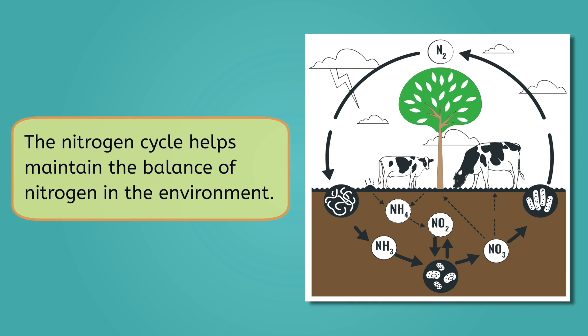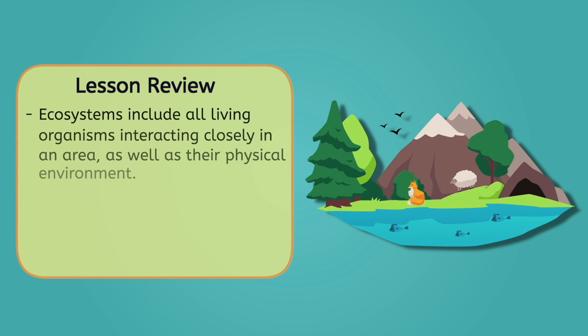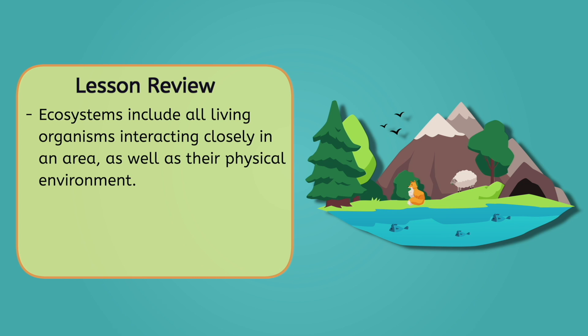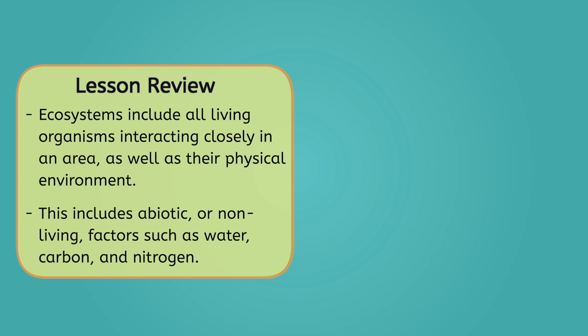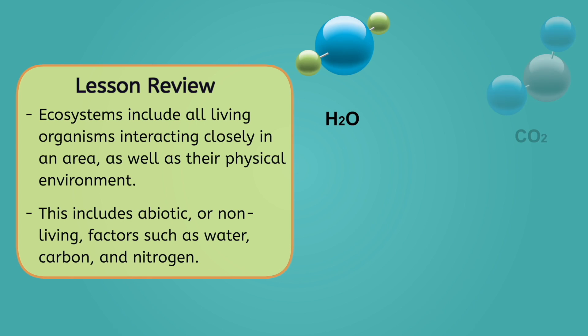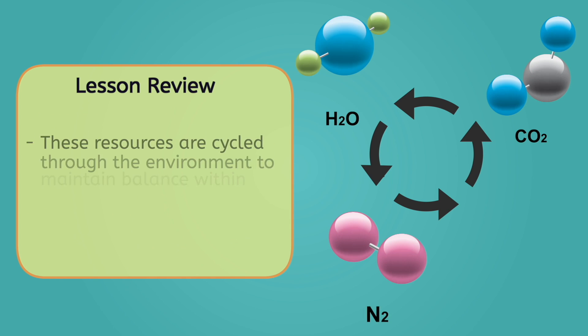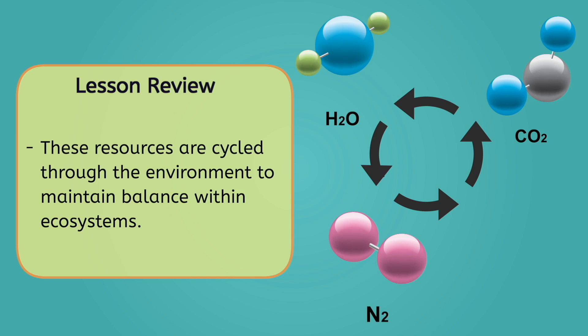The nitrogen cycle is essential because it helps maintain the balance of nitrogen in the environment and provides the nitrogen that plants and animals need to grow and survive. And with that, we have covered the basics of abiotic, or non-living, factors within ecosystems. We've learned that ecosystems include all living organisms interacting closely in an area, as well as their physical environment. This includes abiotic factors such as water, carbon, and nitrogen, which are all cycled through the environment to maintain balance within ecosystems.